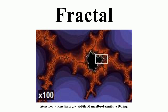A regular line is conventionally understood to be one-dimensional. If such a curve is divided into pieces each one-third the length of the original, there are always three equal pieces. In contrast, consider the Koch snowflake. It is also one-dimensional for the same reason as the ordinary line, but it has, in addition, a fractal dimension greater than one because of how its detail can be measured. The fractal curve divided into parts one-third the length of the original line becomes four pieces rearranged to repeat the original detail, and this unusual relationship is the basis of its fractal dimension.